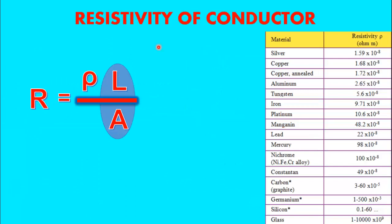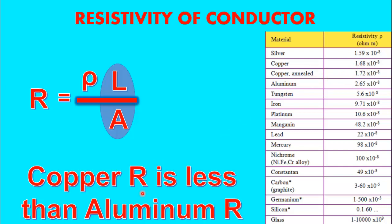Now let's talk about the last factor, which is the resistivity of the conductor — a property of the material. Remember this important point: the lower the resistivity, the better the conductor, meaning it has a greater capability to allow current to flow and offers lower resistance. As you can see here, copper is a better conductor than aluminum because it has lower resistivity, so the resistance of copper is less than that of aluminum, making copper a better conductor.